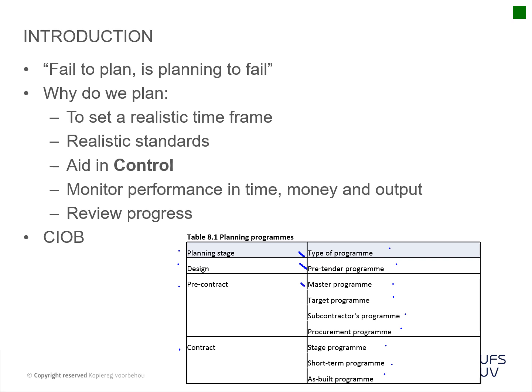You have a master program which includes your design phases up to completion of the project — basically stages 1 to 6. Then you have your target program with specific targets to be met — for instance, one section of a building has to be complete before tenants can go in. Then you have subcontracted programs and your procurement program. Your contract programs include stage programs, short-term programs, and the as-built program at the end of the project.